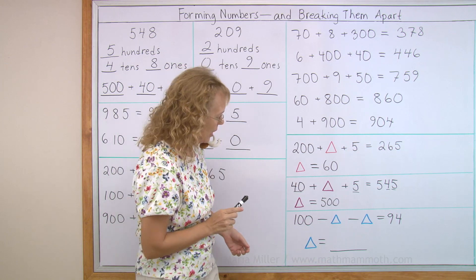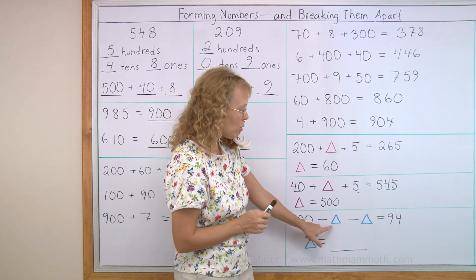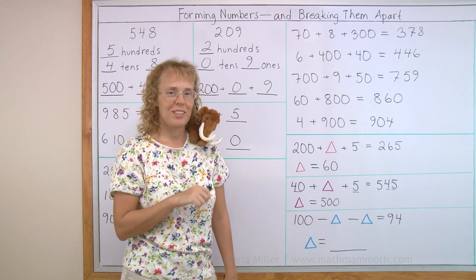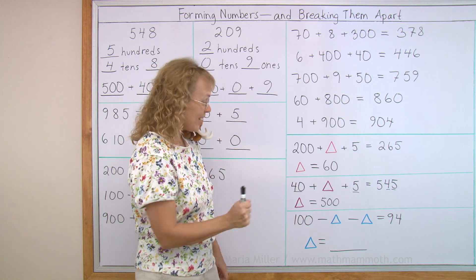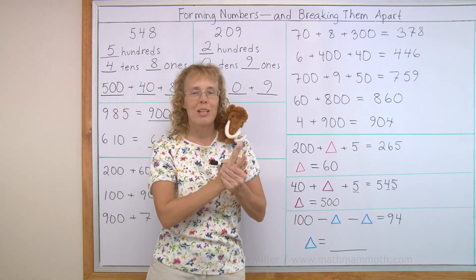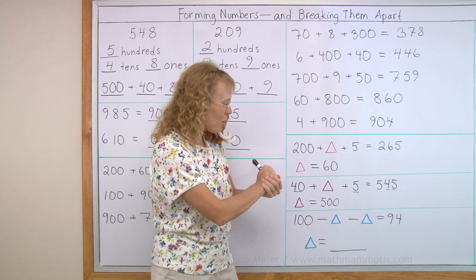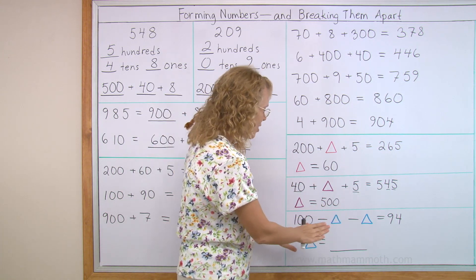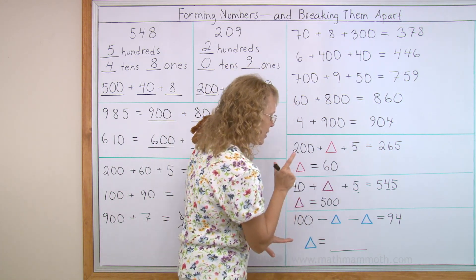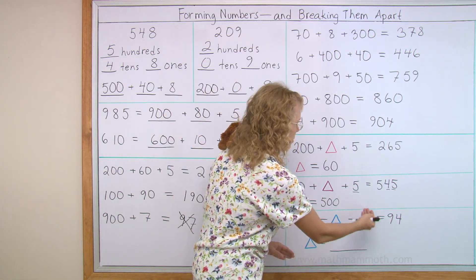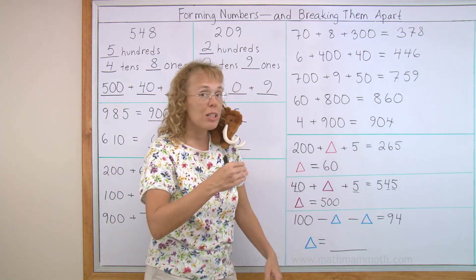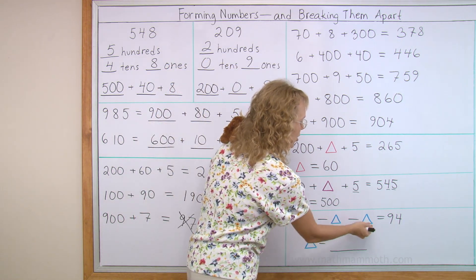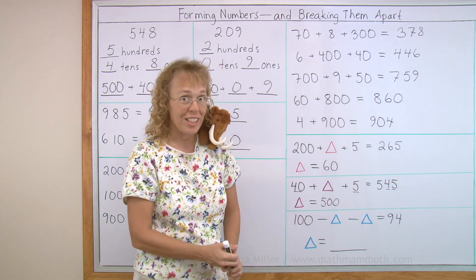And lastly, a little bit different puzzle. Hundred minus triangle minus triangle equals ninety-four. What number is the triangle? This one now has nothing to do with these hundreds and forming numbers and breaking them apart. It is just a puzzle about two-digit numbers. Okay. Let's think of it this way. Hundred take away something. If this was just like one something we are taking away, it would be six. Hundred minus six would be ninety-four. But instead, these two together make six. So the triangle must be three. Right?